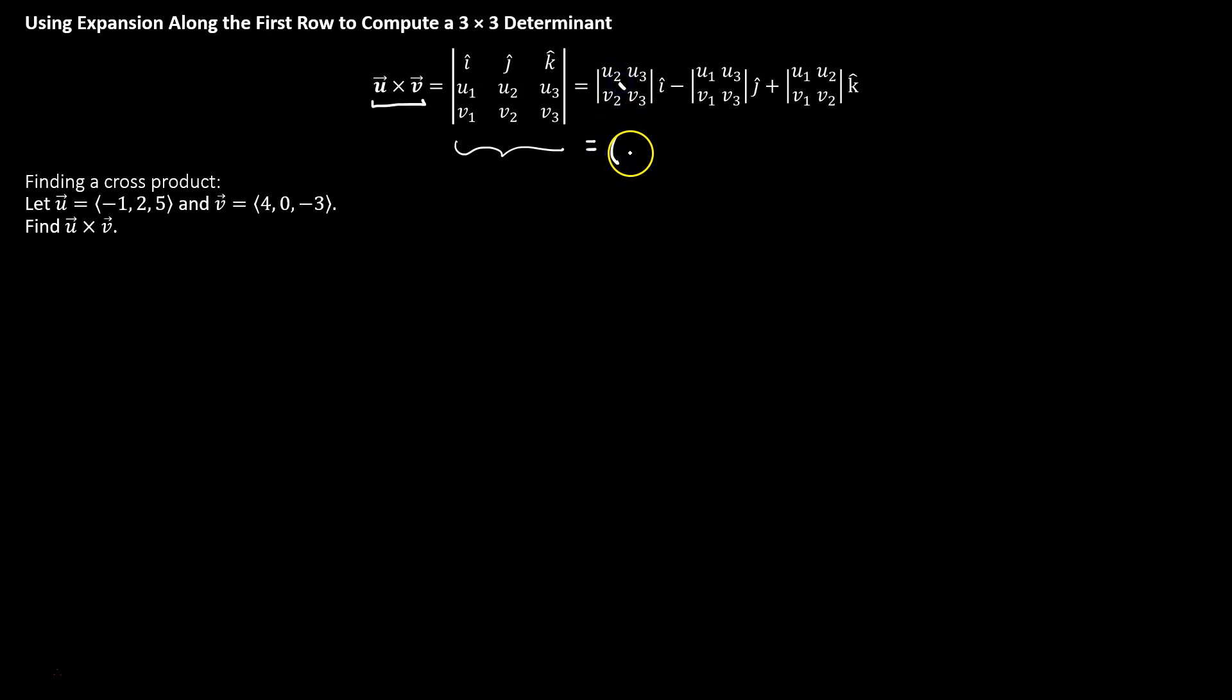Multiplying u2 times v3, u3 times v2. And then copying our minus over, multiplying u1, v3.